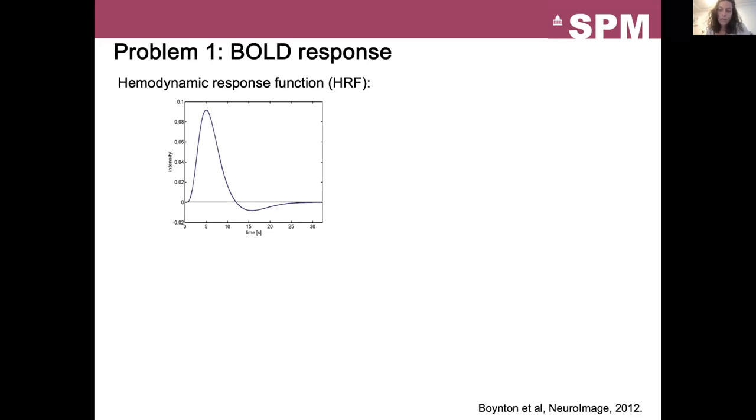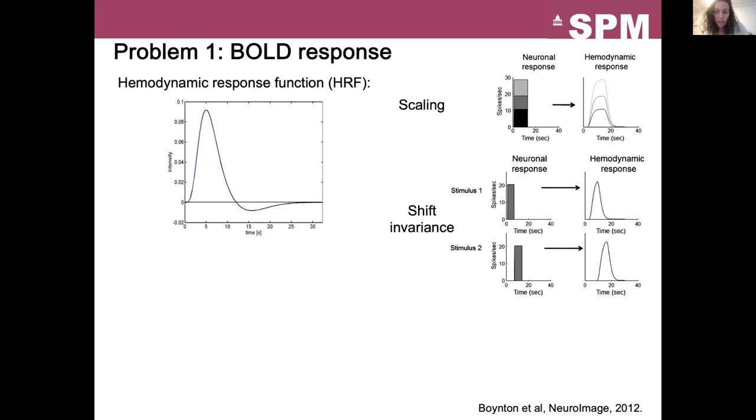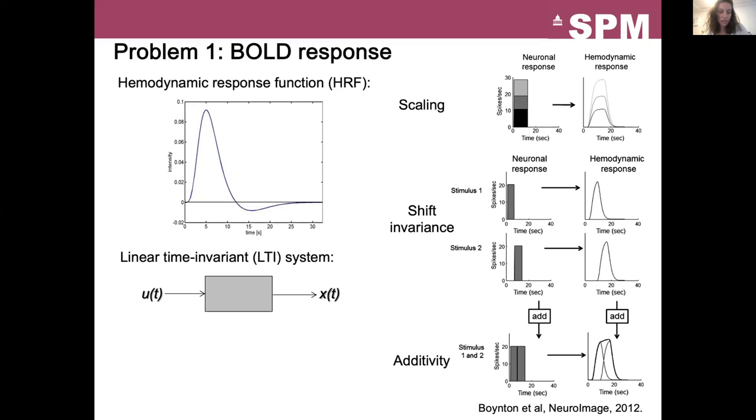It has been shown that the BOLD response related to a neuronal response has this shape. We call it the hemodynamic response function, HRF. We use the following model. The higher the neuronal response is, the higher the amplitude of the BOLD signal is. If the neuronal response is delayed, the HRF is delayed from the same amount of time, and its shape is not changed. If there are two consecutive neuronal responses, the two HRF are added together. And all these properties are captured by the convolution operator. So if we convolve the stimulus function with the HRF, we obtain the BOLD response.